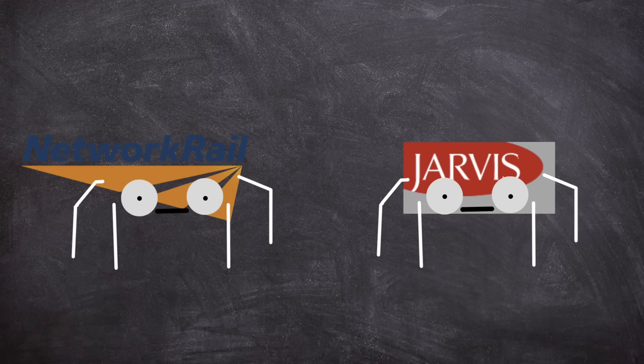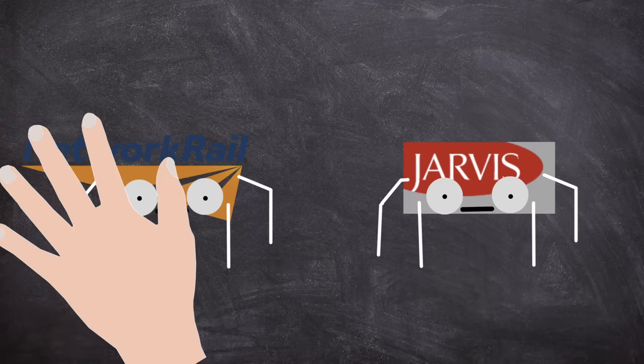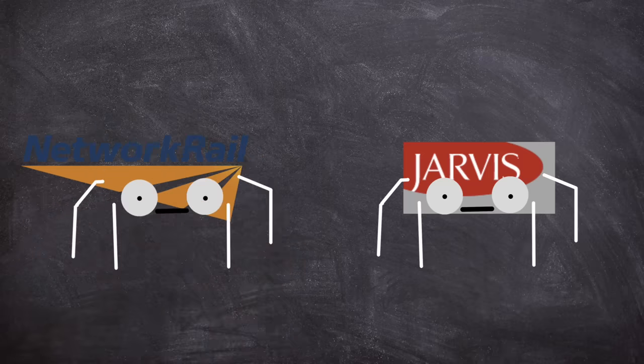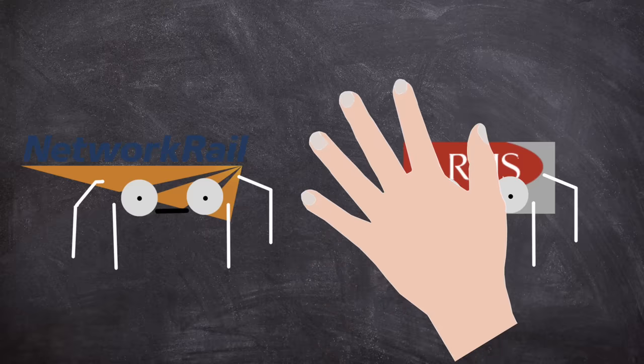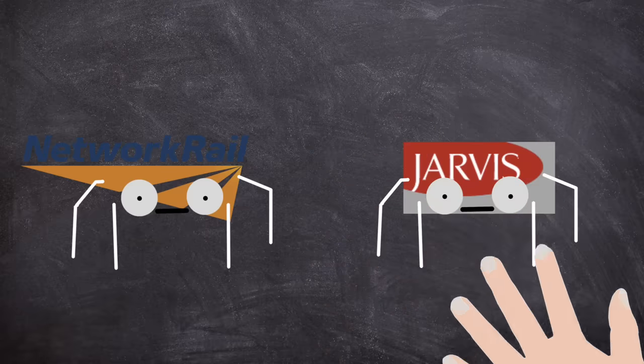Now the fines. Network Rail got hit with a £3 million penalty a few years after the crash in 2010. Jarvis Rail, who originally posited that sabotage theory, ended up admitting liability, setting aside £3 million itself for claims against the company.